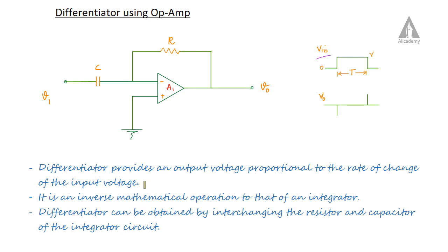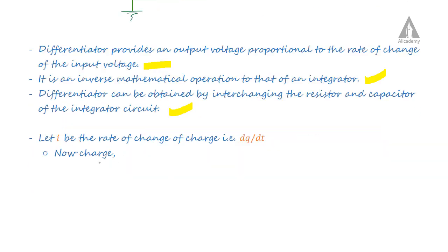The differentiator provides an output voltage proportional to the rate of change of the input voltage. Differentiation is the inverse mathematical operation to that of integration — they are opposites. A differentiator can be obtained by interchanging the resistor and capacitor of the integrator circuit.